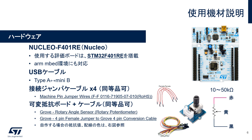まず、ハードウェアです。本実習で使用するのは、ARM Cortex-M4ベースのマイコンであるSTM32F401REが搭載されたNucleoF401REボード、PCとボードを接続するためのType-A mini-B USBケーブル、SPI実習で使用するメスメスタイプの接続ジャンパーケーブルを4本、ADC実習で使用する可変抵抗ボードです。